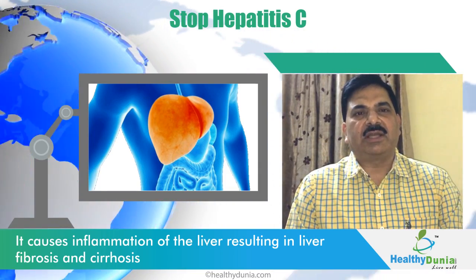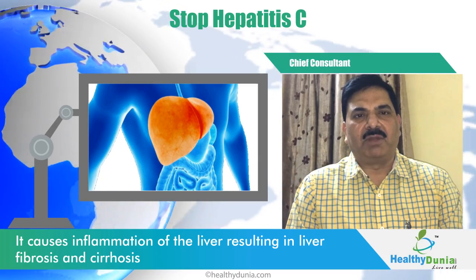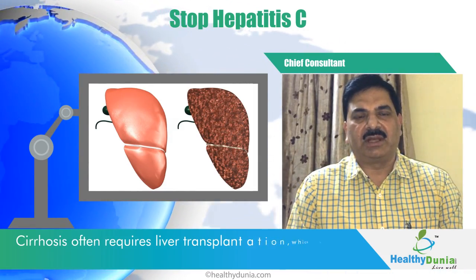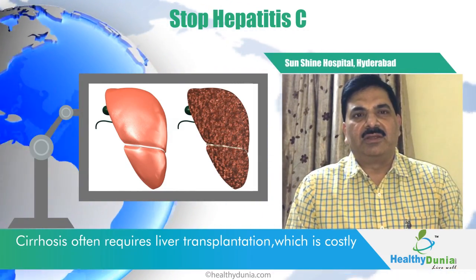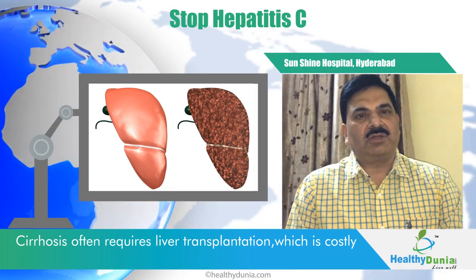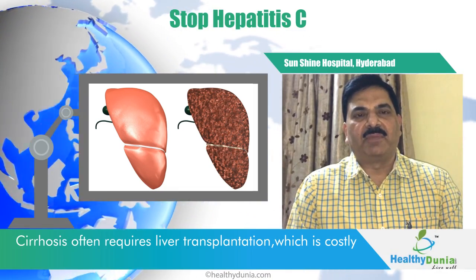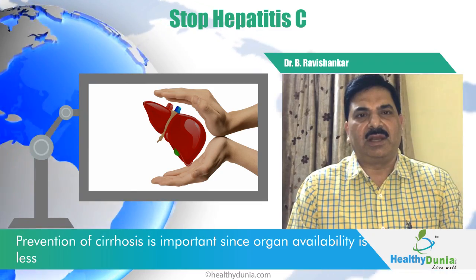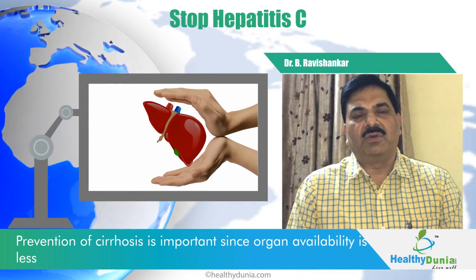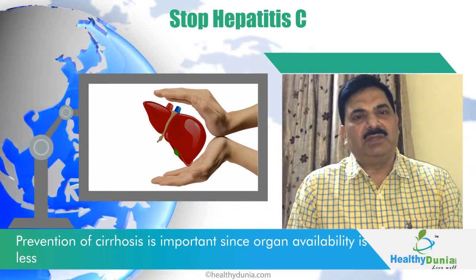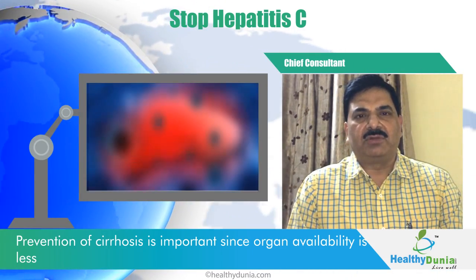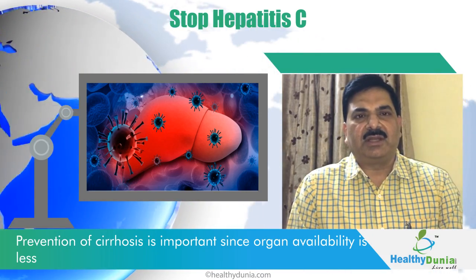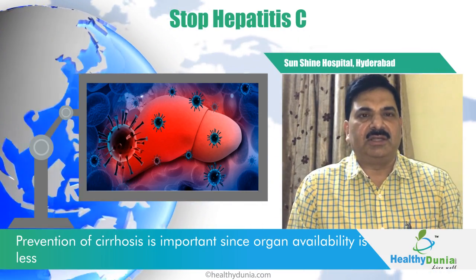Cirrhosis has got several complications and some patients with cirrhosis require liver transplantation. The cost of liver transplantation is huge and organ availability is also less. So we need to prevent cirrhosis. The C virus can produce cirrhosis and we need to go after this virus, diagnose it, and then treat it.